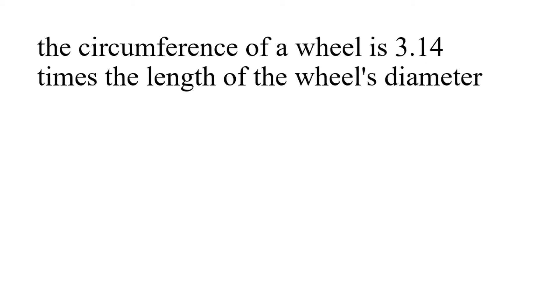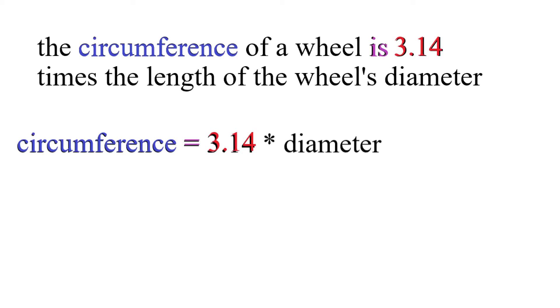We can take this English sentence and translate it into an equation. In blue, we have the circumference. In purple, the word is becomes an equals sign. 3.14 is in red, and diameter is in green. Even more simply, c for circumference equals pi 3.14 times diameter d.